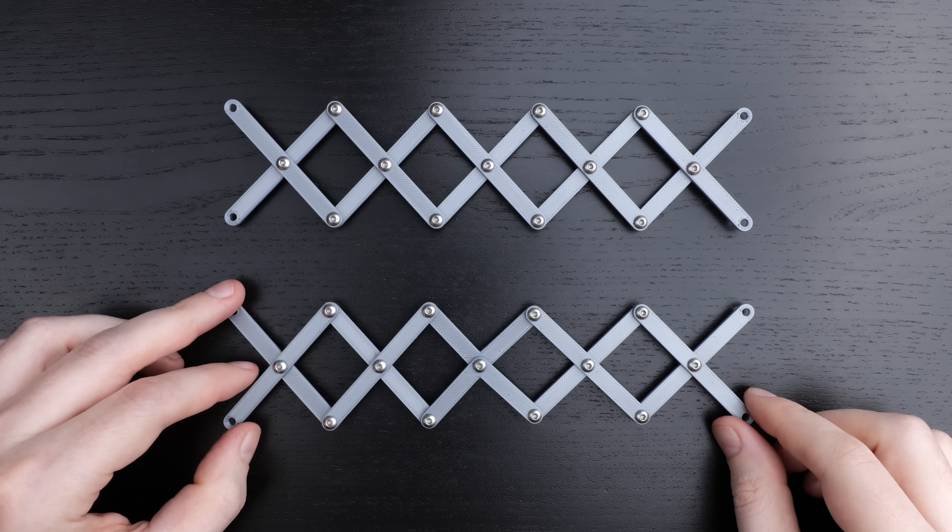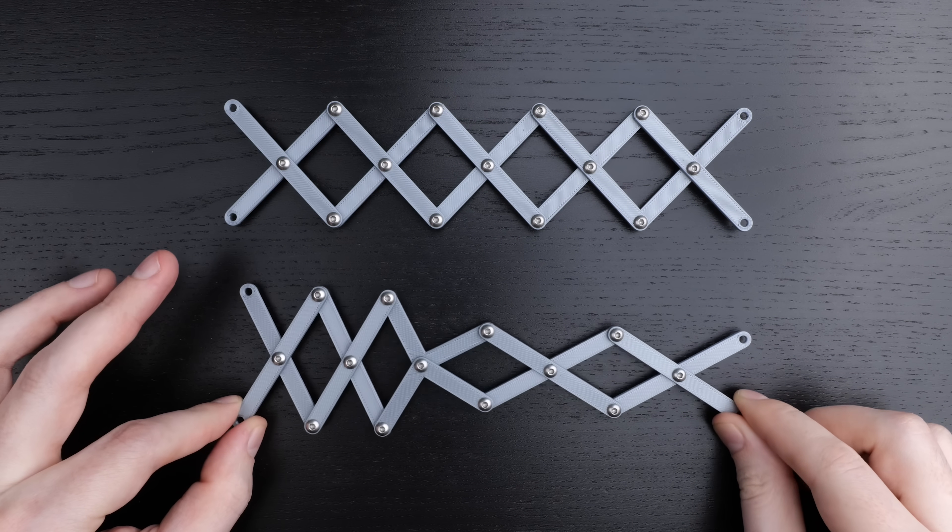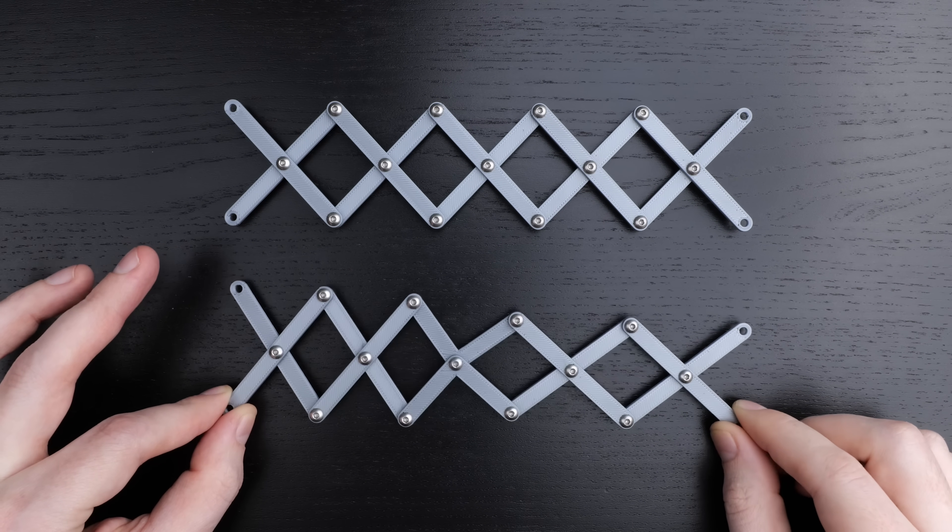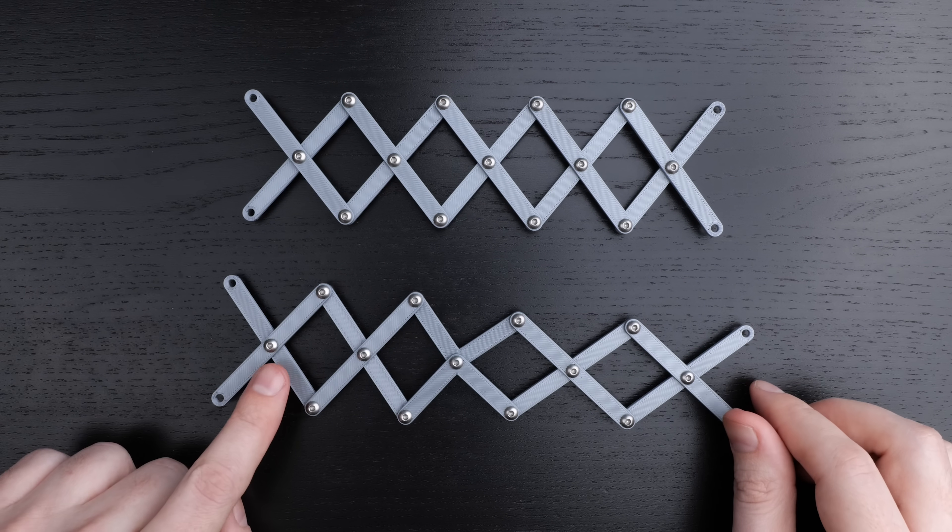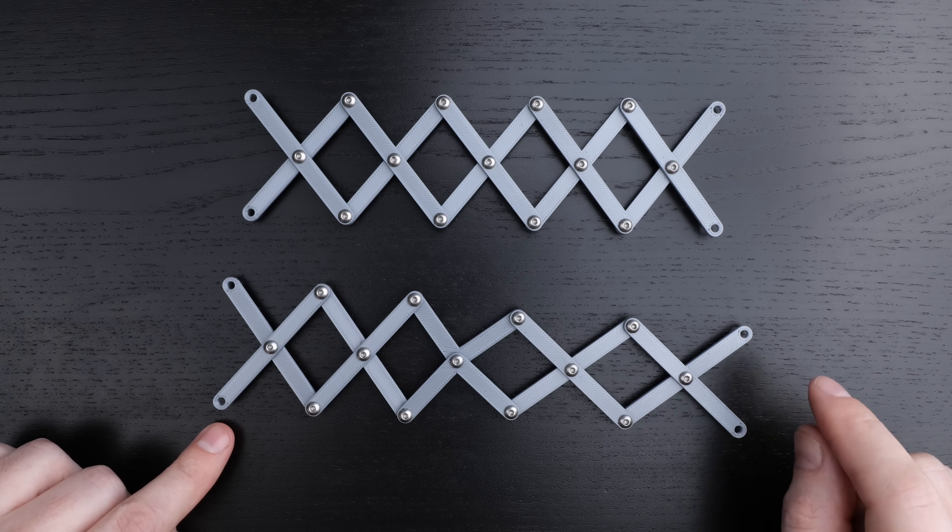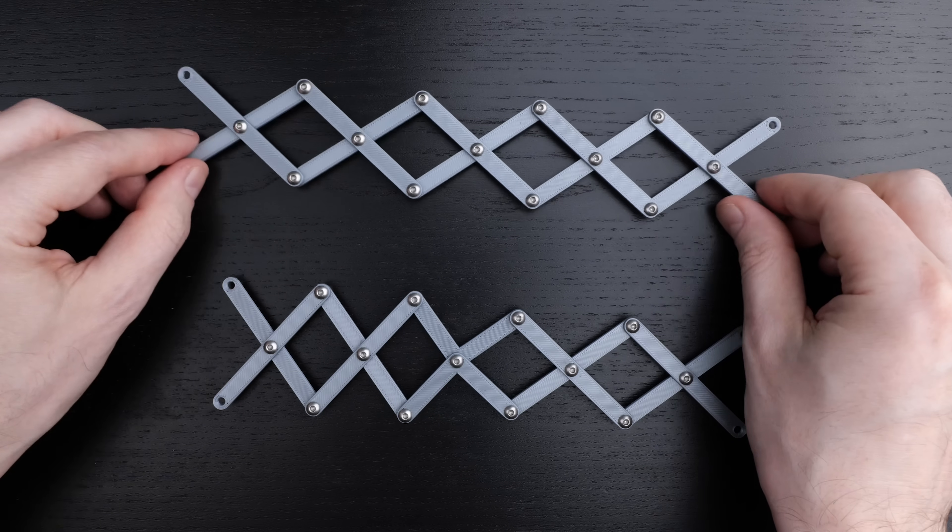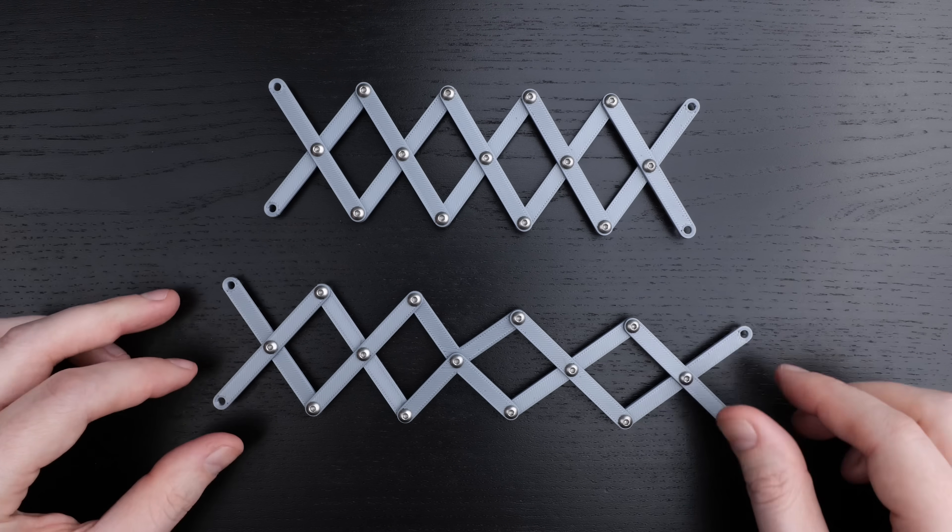So how does it do this? How come this NOT gate scissor linkage works so differently than the standard scissor linkage? Well, so the first thing to notice is that the first two Xs here and the last two Xs here, they're identical to the standard scissor linkage mechanism.